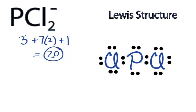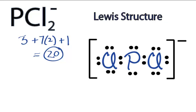One last thing we need to do - let's put brackets around it and a negative sign to show that it is an ion. So that's the Lewis structure for PCl2-. This is Dr. B, and thanks for watching.